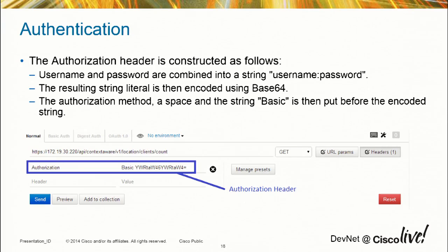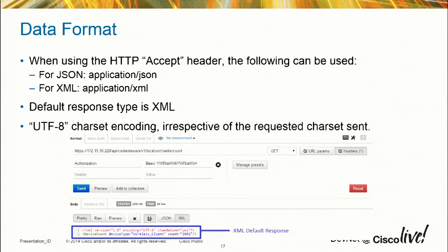Authentication is your standard basic authentication — Base64. In Postman, you just set the authorization. On the MSC side, you have a user ID and password; you do username colon password and that gets you the authorization you need. As for the accept header, if you don't put anything in there, we default to XML in 8.0, and it'll return the response with character sets encoded. Here's an example of a client count where I came back and got a count of 2002.